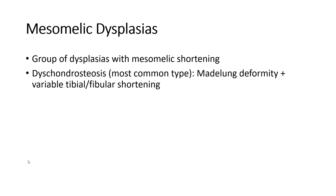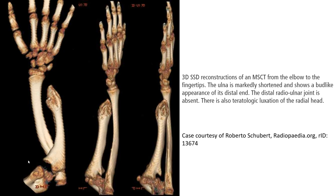Mesomelic dysplasia shows proper dysplasia with mesomelic shortening. This is a 3D SSD reconstruction of an MSCT from the shoulder to the fingertip. The ulna is markedly shortened with a book-like appearance at its distal end. The distal radio-ulnar joint is absent, and there is also involvement of the larger bones of the hand.